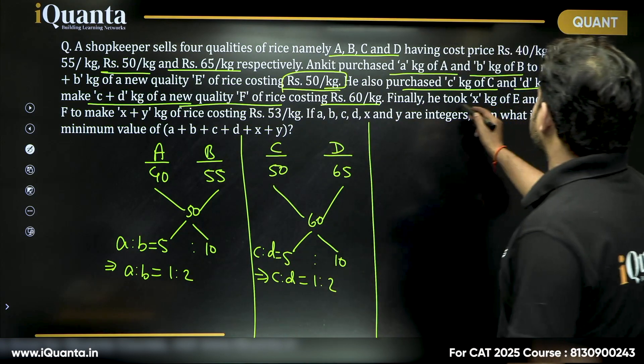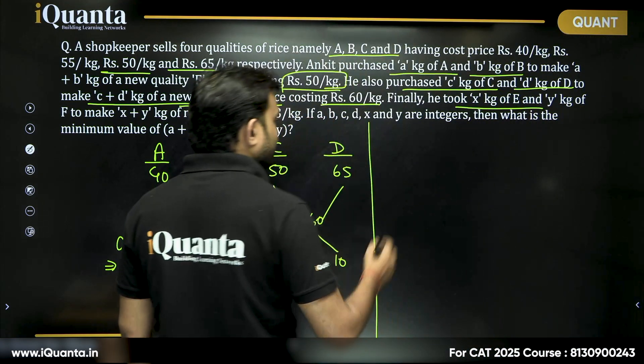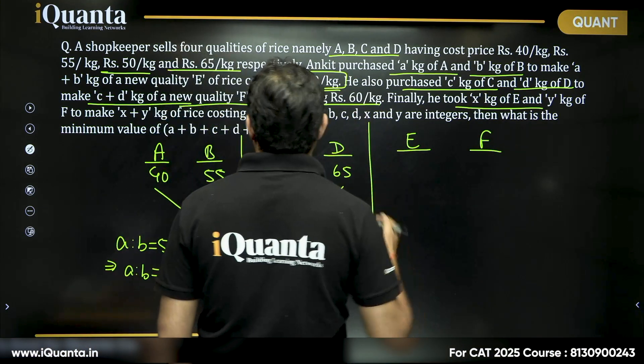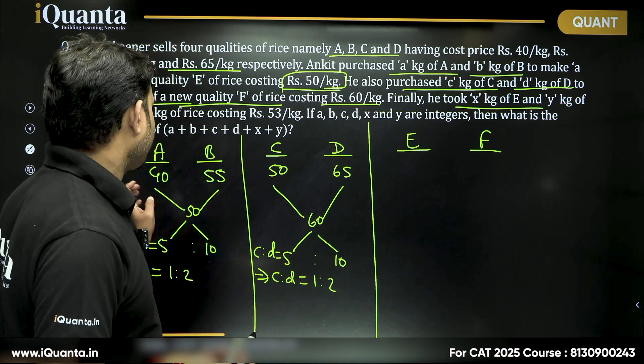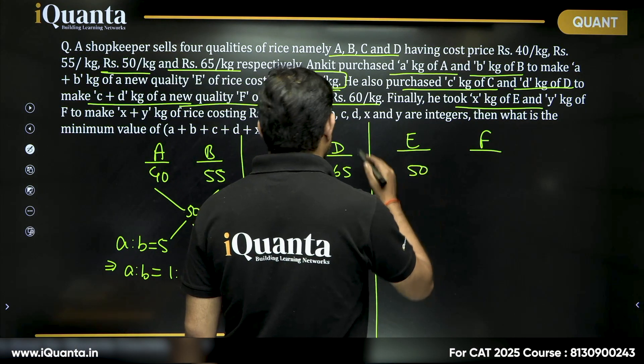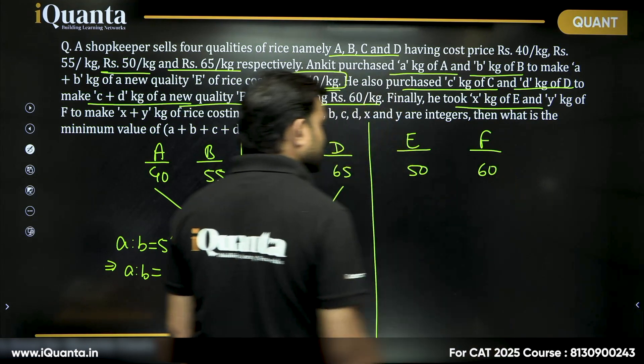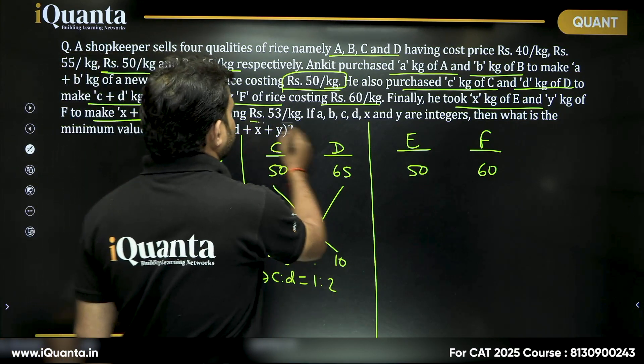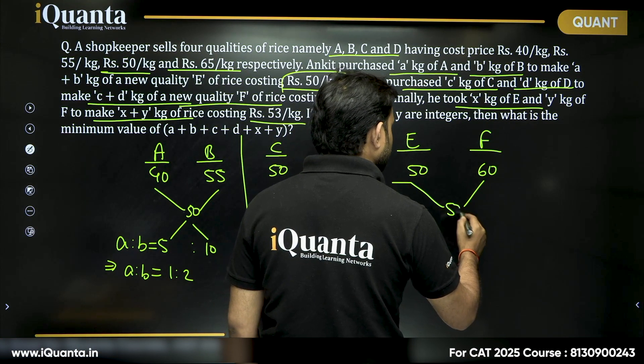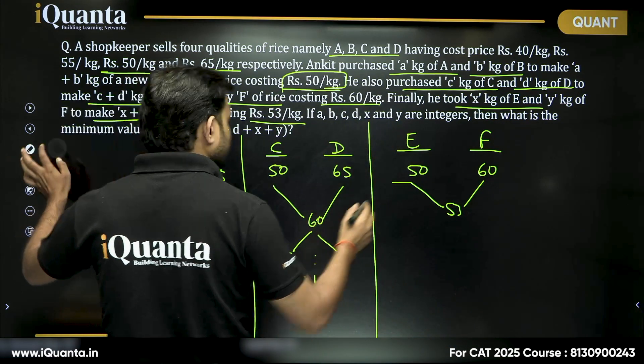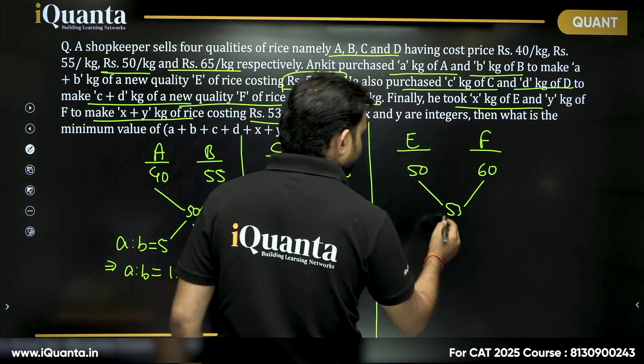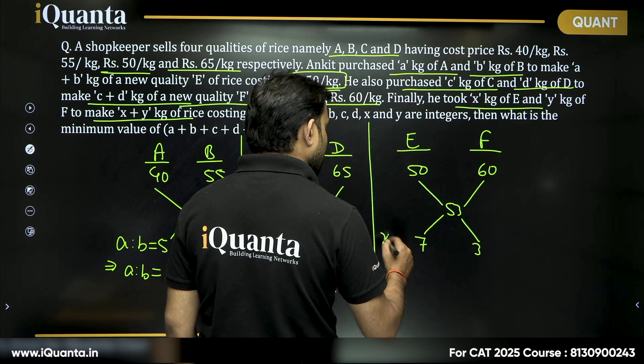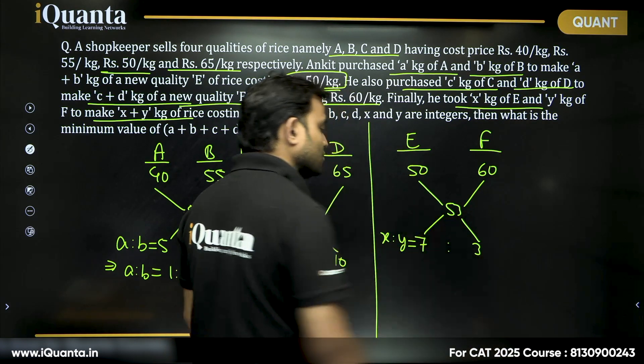Finally he took x kg of E and y kg of F, so E and F, x kg. What is the cost of E? We can say it is 50. What is the cost of F? We can say it is given 60. Taking these two together, to make x+y kg of rice costing 53 per kg, costing 53 rupees per kg. Once again, we can use the allegation here. 60 minus 53 is 7, 53 minus 50 is 3. So, we can say x is to y is equal to 7 is to 3.